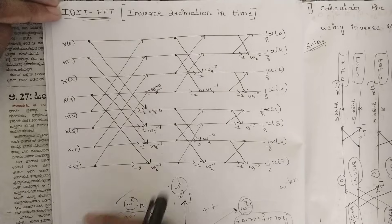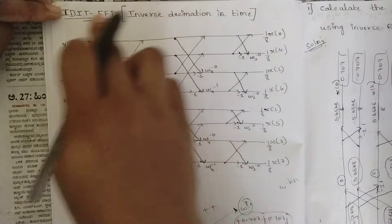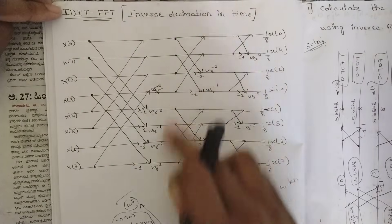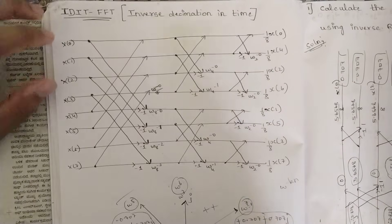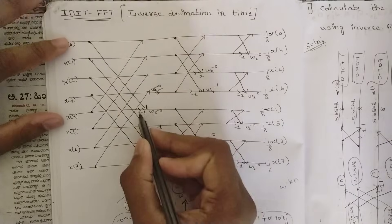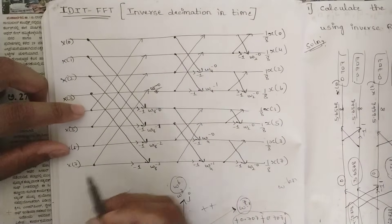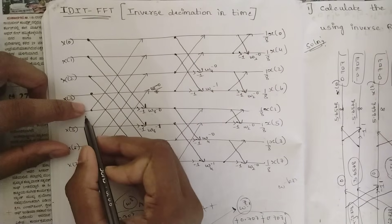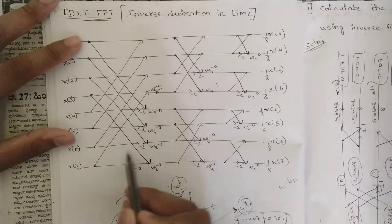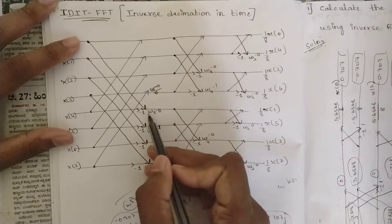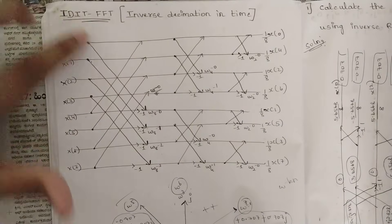There is one more change in the structure. In DIT, we would write first the pairs of two, then four, then eight. In IDIT this ordering changes — I will explain it while solving the problem. Another change: in DIT we would write W_N to the power zero in the input side. In IDIT, where the downward arrow meets, those output points should have the values W_8 to the power minus zero, minus one, minus two, minus three.